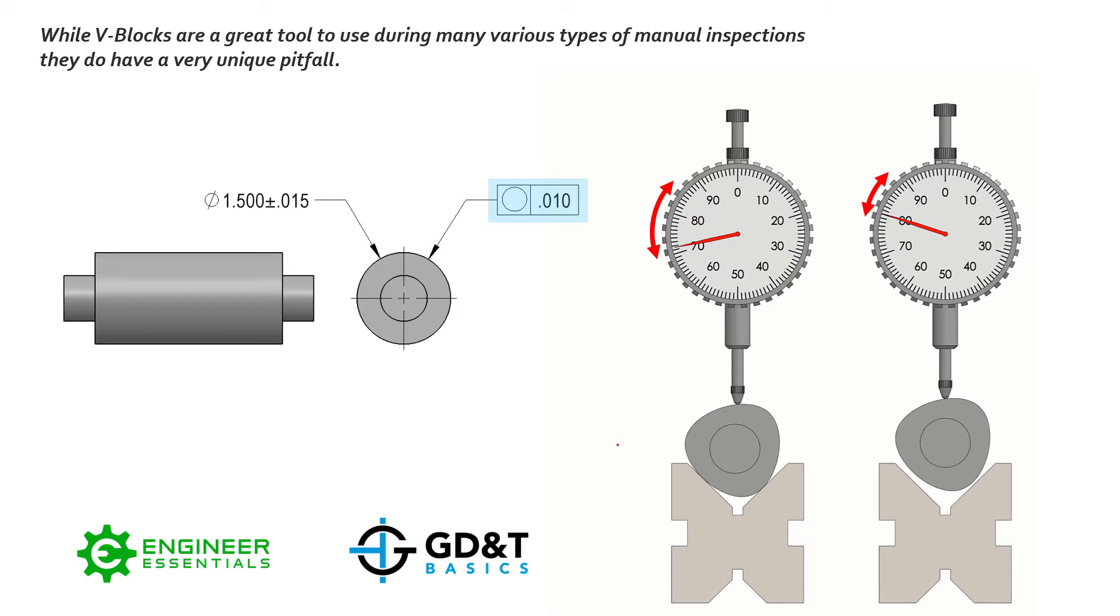So to first recap, this was one of the images from the video that we covered on V-blocks and the inherent issues that happen with V-blocks, and why we can't always trust them down to a certain level of accuracy in order to inspect cylindricity or runout. You can see here the example on the left is a real-world example of a trilobed cylinder, this outside diameter sitting inside that V-block and rotating around.